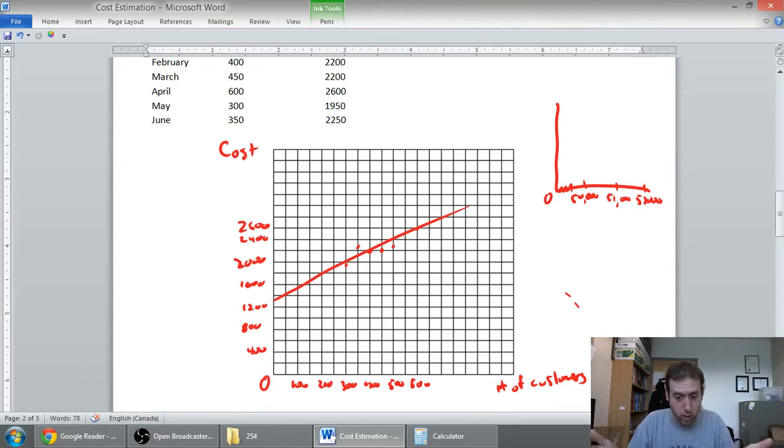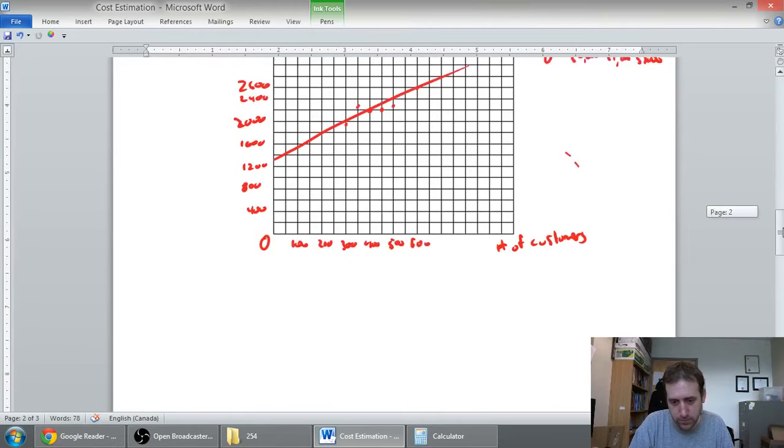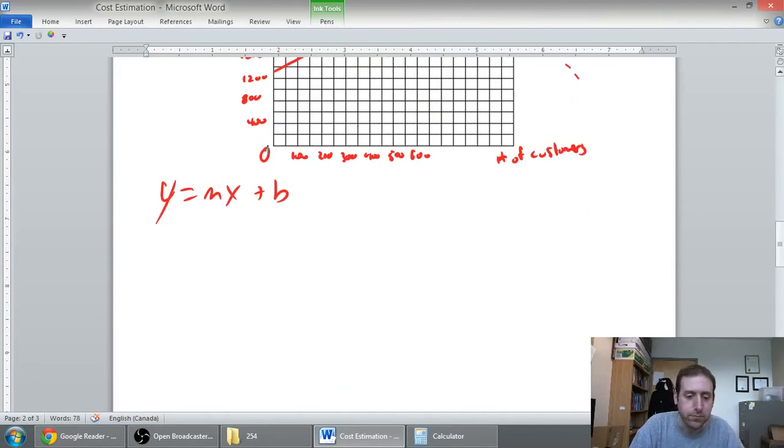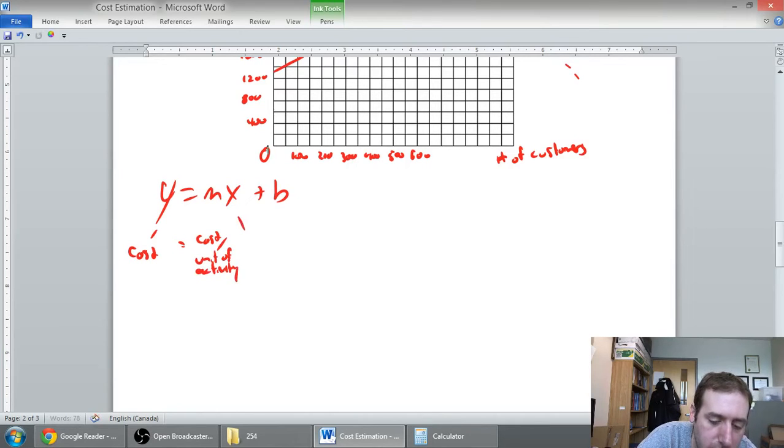So, let's now try to figure out the formula for a line. Remember, the formula for a line is y equals mx plus b. Y equals mx plus b is the formula for a line. We all remember the pieces of the formula. Y is our cost. M is our cost per unit of activity, and in this case, it's cost per customer. X is activity level. And b is our fixed cost.